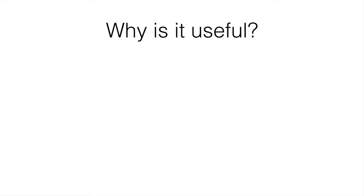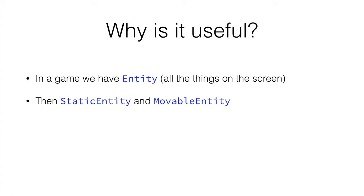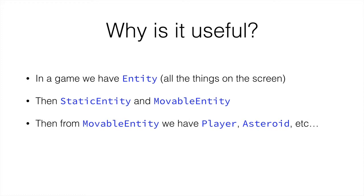So why is this useful? Let's take a game approach. In a game, we have one superclass called entity — these are all the things on the screen that you can see. Take the asteroid game we were talking about, where we have one spaceship navigating the middle of the screen and asteroids coming and going that you have to destroy. You have static entity and movable entity. The player and the asteroids could be movable entities, and movable entity has some behaviour that lets it move about on the screen, while static entity doesn't have that behaviour. By making player and asteroid come from movable entity, we don't have to program the ability to move in both — we can just put it into movable entity, and then both player and asteroid have these properties.